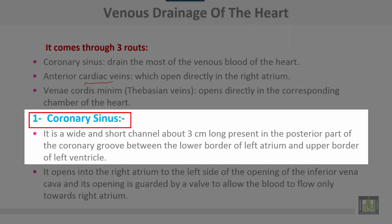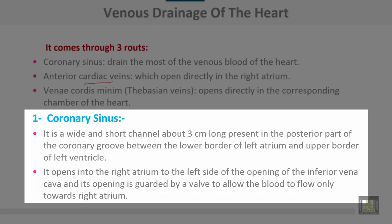The coronary sinus is a wide, short channel about three centimeters long, present in the posterior part of the coronary groove between the lower border of the left atrium and the upper border of the left ventricle. It opens into the right atrium to the left side of the opening of the inferior vena cava, and its opening is guarded by a valve to allow blood to flow only towards the right atrium.